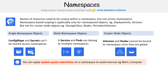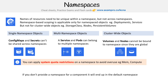You can apply resource quota restrictions on namespaces to avoid over-usage, like memory and compute. That's an example of leveraging namespaces to put limitations and security restrictions in place. If you don't provide a namespace for a component, it will end up in the default namespace, as we already said. We'll see you in the next video.